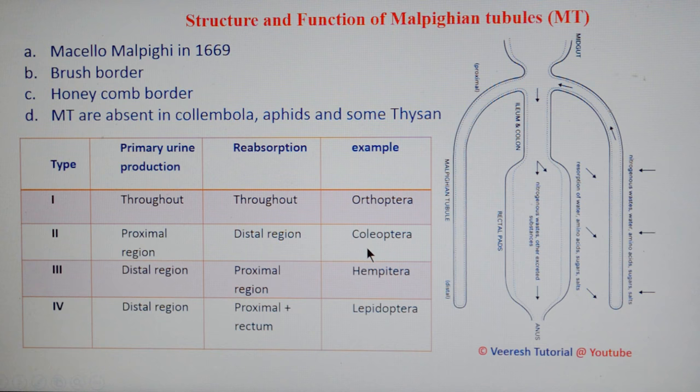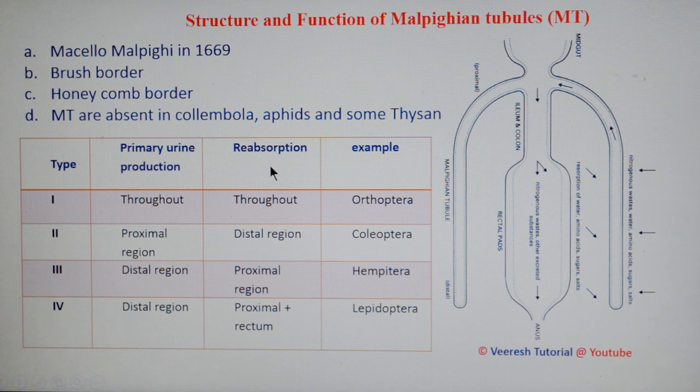In Coleoptera, the proximal region is involved in primary urine production whereas the distal region is involved in reabsorption. In Hemiptera, the distal region is involved in primary urine production whereas the proximal region along with the rectum is involved in reabsorptive function.